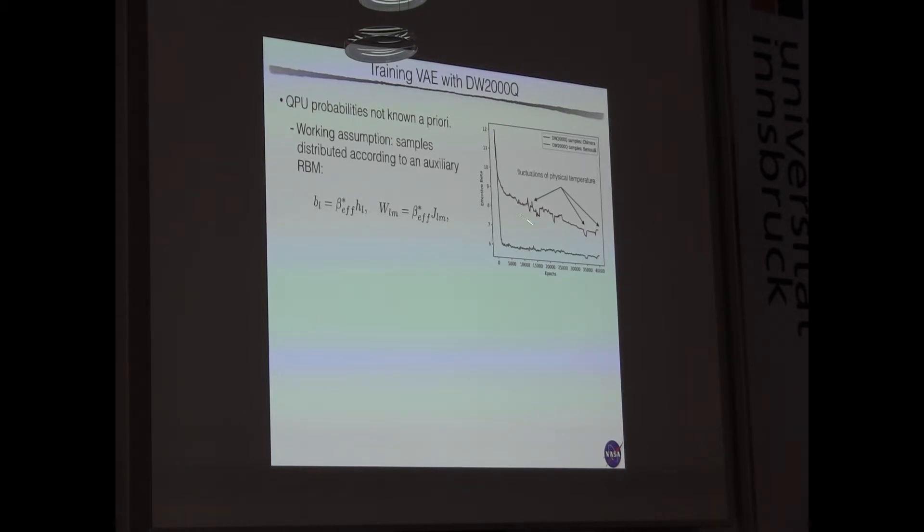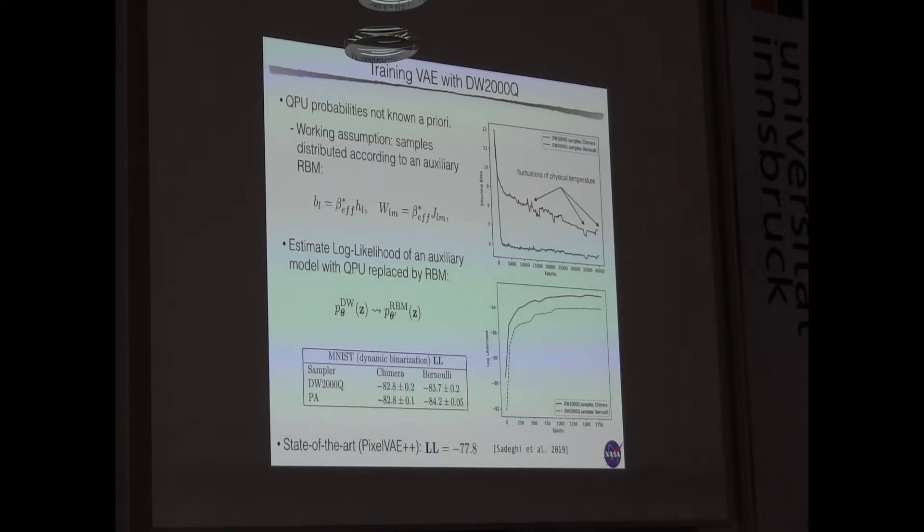These are two runs that are also parallel in terms of wall clock. So these fluctuations are real fluctuations of the physical temperature. But so far, we need to extract this to have efficient training. But now, if we use this auxiliary RBM with this estimated beta, we can replace the hardware probabilities with the probabilities of the model RBM, and we can compute the likelihood of this model. And we see that we achieve the model I showed you corresponds to likelihood that are close to state-of-the-art, which is now obtained by another work we have done between NASA and D-Wave.